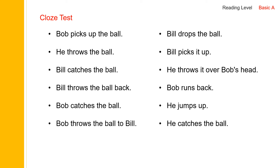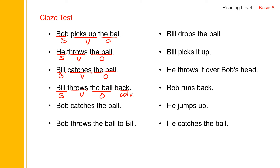Let's read the sentences just one more time and identify grammar. Bob picks up the ball — Bob is the subject, picks up is the verb, the ball is the object. He throws the ball — he is subject, throws is verb, the ball is object. Bill catches the ball — Bill is subject, catches is verb, the ball is object. Bill throws the ball back — Bill is subject, throws is verb, the ball is object, back is adverb. Bob catches the ball — Bob is subject, catches is verb, the ball is object. Bob throws the ball to Bill — subject, throws is verb, the ball is object, to Bill is adverb.